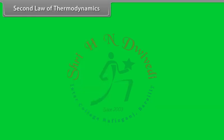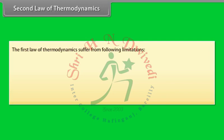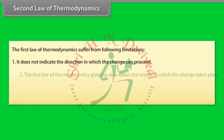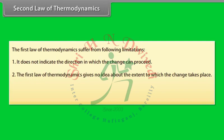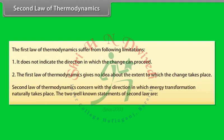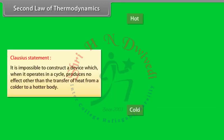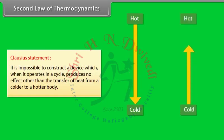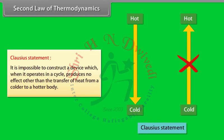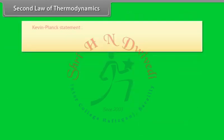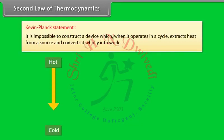The First Law of Thermodynamics has the following limitations: it does not indicate the direction in which a change can proceed, and it gives no idea about the extent to which changes take place. The Second Law of Thermodynamics concerns the direction in which energy transformation naturally takes place. The two well-known statements are — Clausius statement: it is impossible to construct a device which, operating in a cycle, produces no effect other than the transfer of heat from a colder to a hotter body; and Kelvin-Planck statement: it is impossible to construct a device which, operating in a cycle, extracts heat from a source and converts it wholly into work.